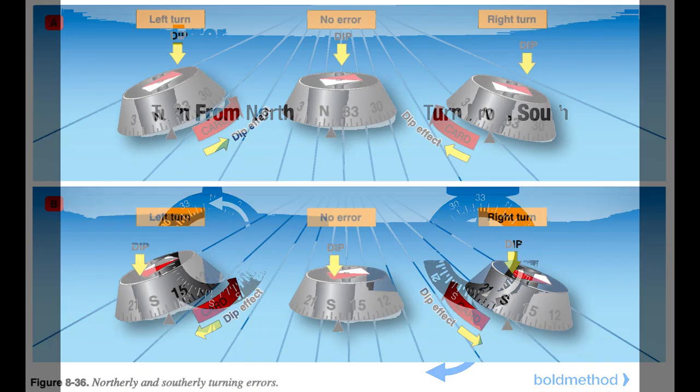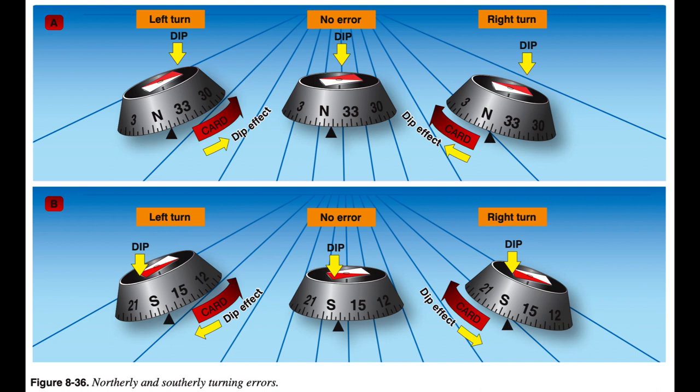The center of gravity of the float assembly is located lower than the pivotal point. As the aircraft turns, the force that results from the magnetic dip causes the float assembly to swing in the same direction as the float turns, resulting in a false northerly turn indication. Because of this lead of the compass card or float assembly, a northerly turn should be stopped prior to arrival at the desired heading. This compass error is amplified with proximity to either magnetic pole. One rule of thumb to correct for this leading error is to stop the turn 15 degrees plus half of the latitude; for example, if the aircraft is being operated near 40 degrees latitude, the turn should be stopped 35 degrees prior to the desired heading.